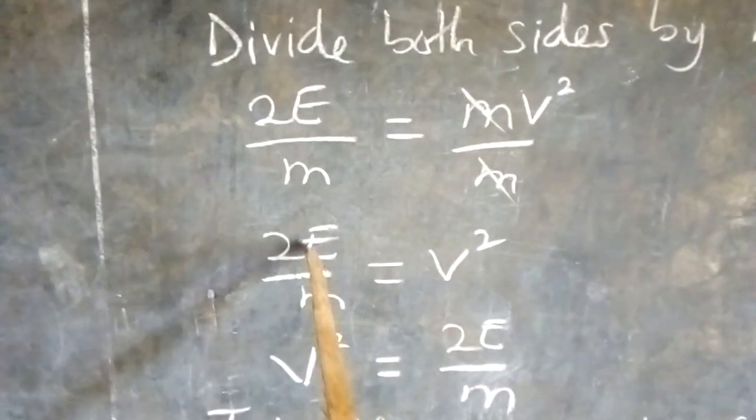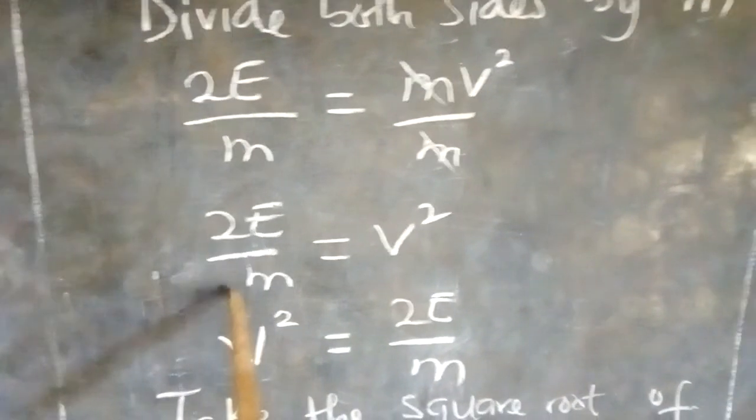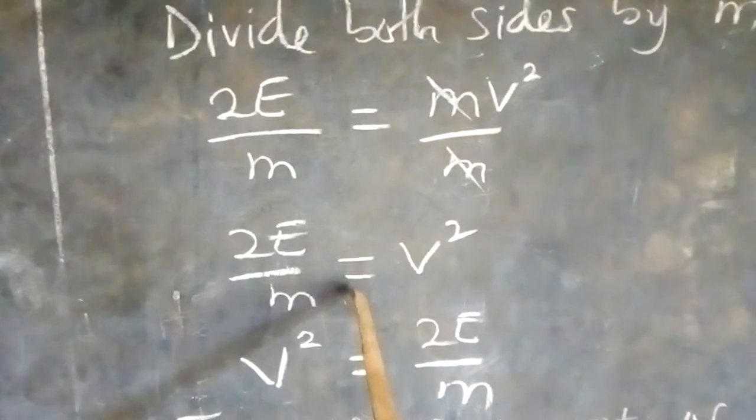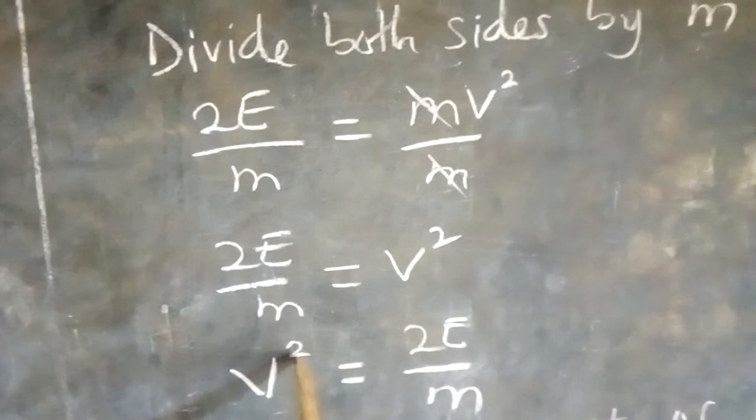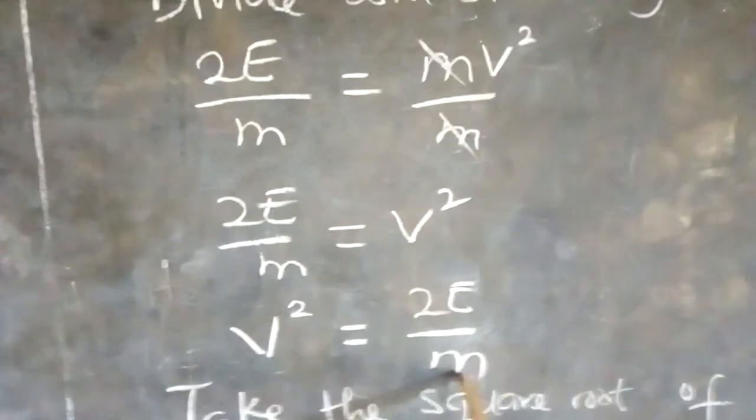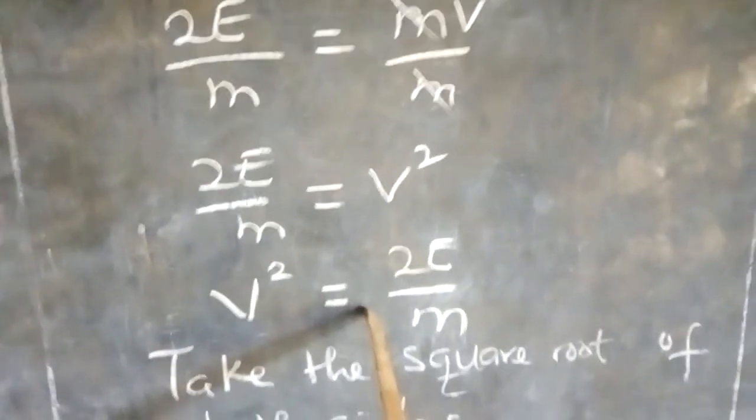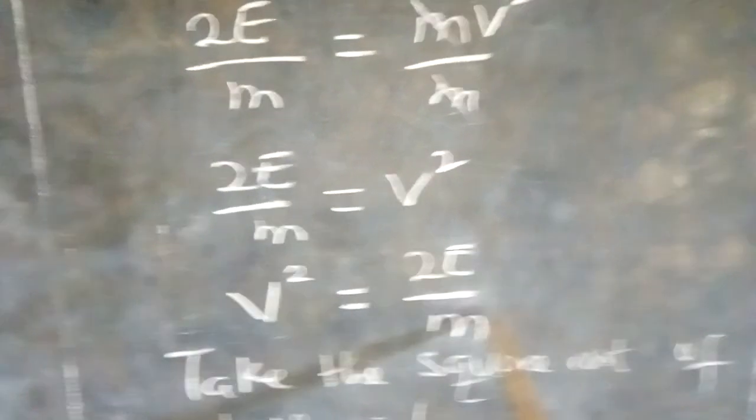Then, we have 2E over m here. 2E over m equals v squared. It is the same thing as writing it as v squared equals 2E all over m. I mean, this expression could be written as this as well. So, v squared is equal to 2E all over m.